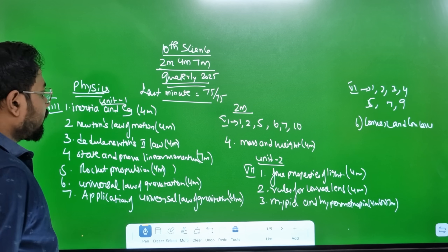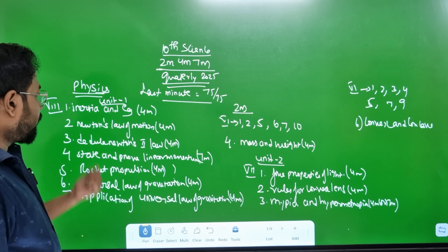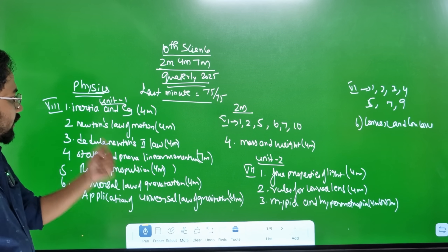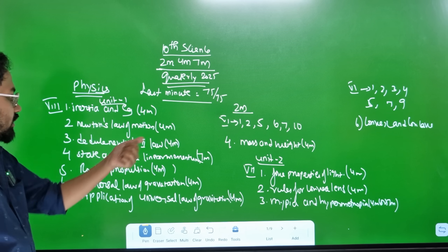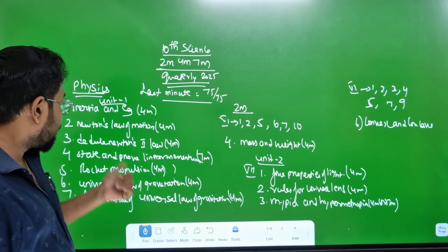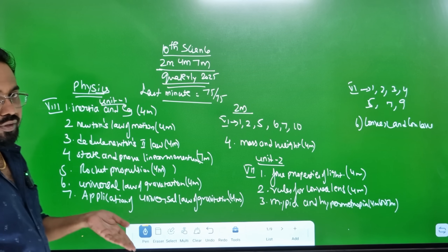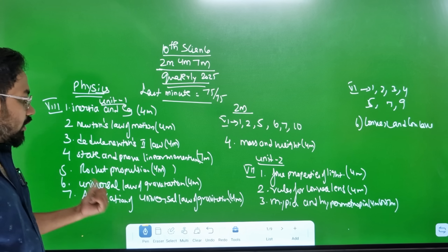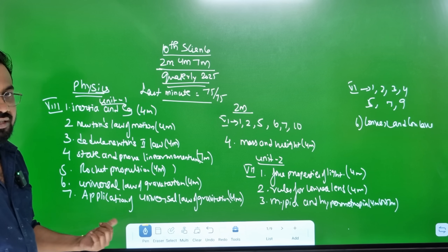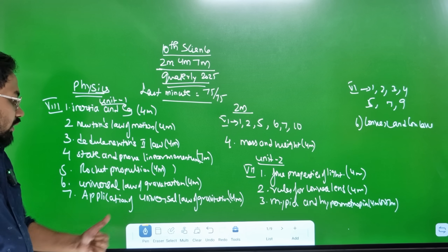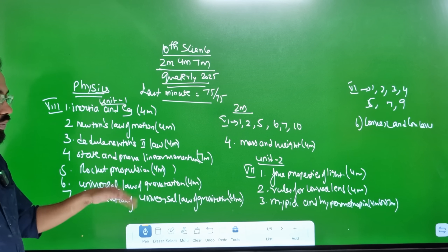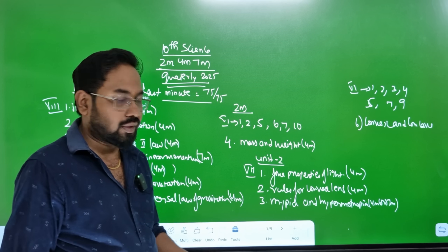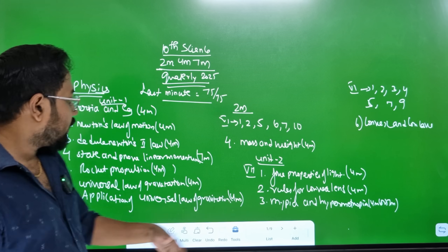Physics is Unit 1. Physics has 4 units. Unit 1 is all detail. Inertia, Newton - Newton's second law is easy. Reduce Newton's second level of derivation. Linear momentum is 7 marks. Rocket propulsion is easy. Universal law of gravitation and its applications are also covered. There are two combined topics - combined topics are 7 marks, the other one is 4 marks.